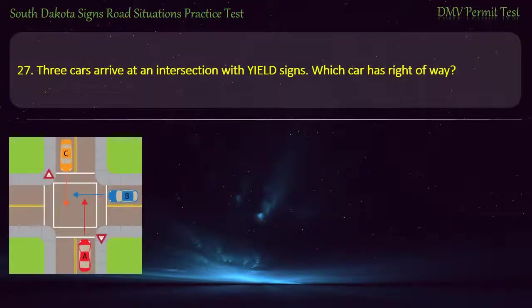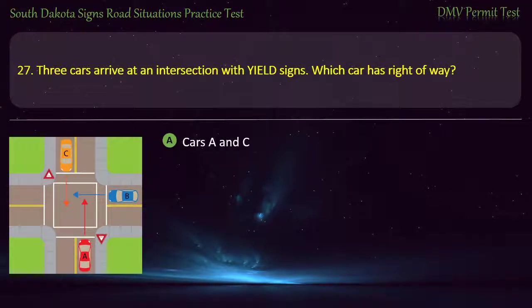Question 27: Three cars arrive at an intersection with yield signs. Which car has right-of-way? Options: Cars A and C; Car B; Car A; Car C. Answer: Car B.